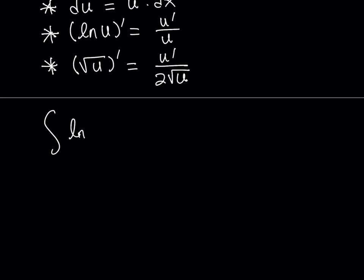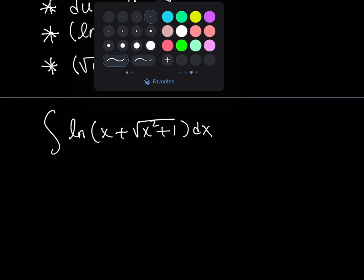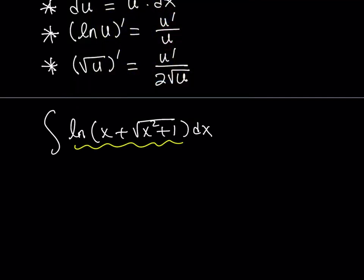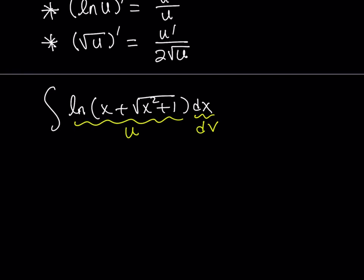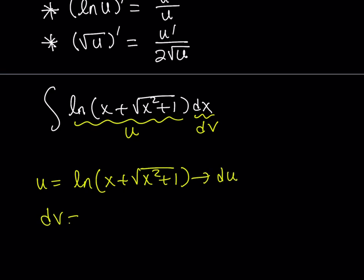So we're trying to integrate ln of x plus the square root of x squared plus 1, dx. We're going to name these u and dv. Here I don't really have a choice because there's only one function multiplied by dx, so dx has to be dv. So u is equal to ln of x plus the square root of x squared plus 1, and dv is dx. From here I'll calculate v — if you just integrate both sides and forget about the constant for now, v equals x.